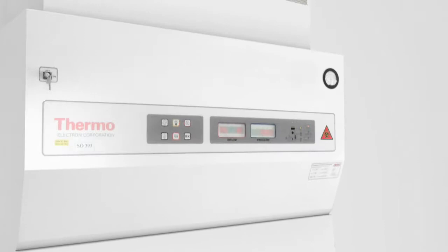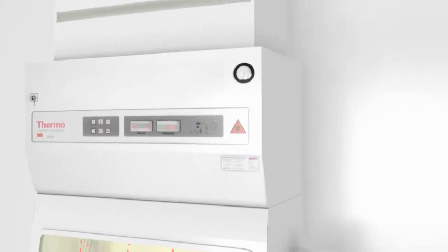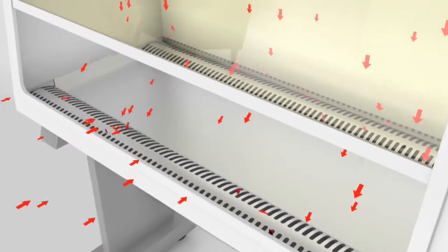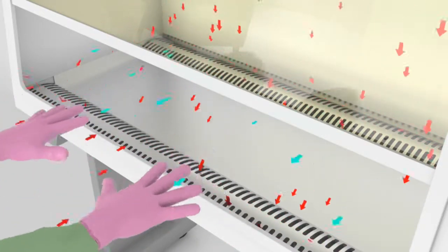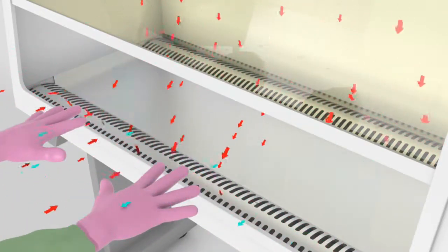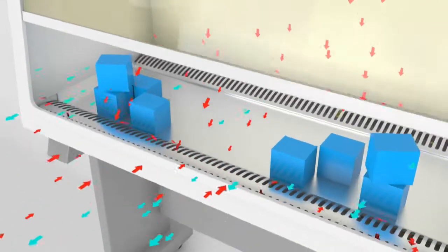HEPA filtered air from the exhaust can be recirculated to the room or discharged to the outside of the building through a dedicated duct or through the building exhaust system. But the efficiency of the cabinet air flow can be compromised by other factors such as overcrowding in the lab, rapid movement around the cabinet, open doors and windows, and overcrowding in the cabinet.